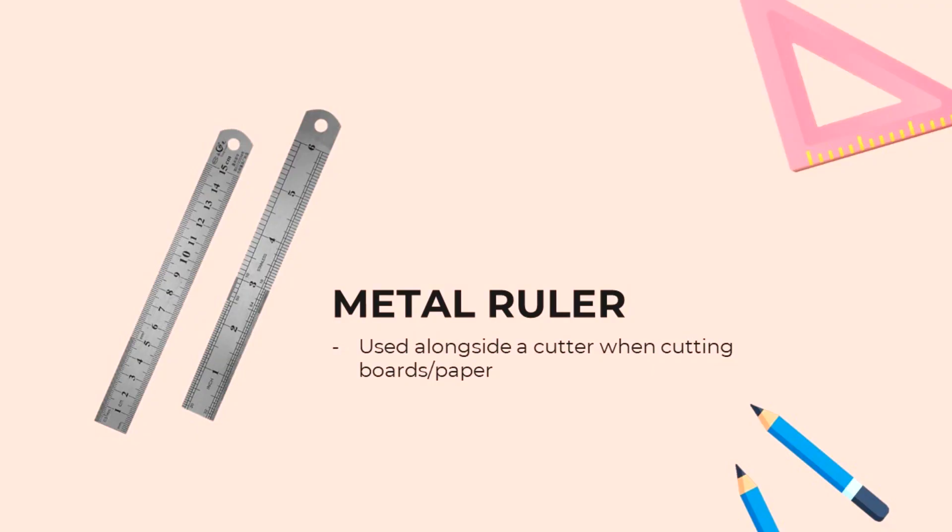Next we have the metal ruler. I already discussed this in my rulers video — link down below — but I'll repeat it: please buy a metal ruler. It's used alongside the cutter for cutting boards, and please do not use your triangles for cutting boards because they will get damaged, while the metal ruler will not.